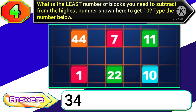Next, variant 2 question: what is the least number of blocks you need to subtract from the highest number shown here to get 10? So if you get the numbers as 44, 7, 11, 1, 22, and 10, here the highest number is 44, so the answer will be 34.